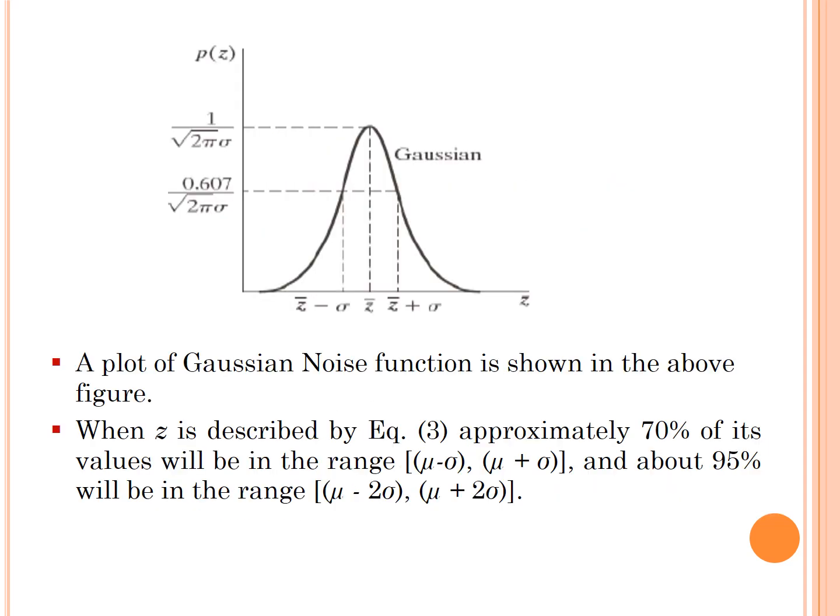A plot of the Gaussian noise function is shown here in this figure. When z is described by equation 3, approximately 70% of its values will be in the range μ - σ and μ + σ, and about 95% will be in the range μ - 2σ to μ + 2σ.